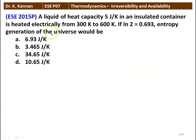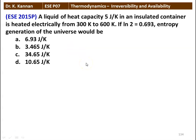The first question: a liquid of heat capacity 5 joules per Kelvin in an insulated container is heated electrically from 300 Kelvin to 600 Kelvin. If log 2 equals 0.693, the entropy generation of the universe would be? The four options are 6.93, 3.465, 34.65, and 10.65 joules per Kelvin.